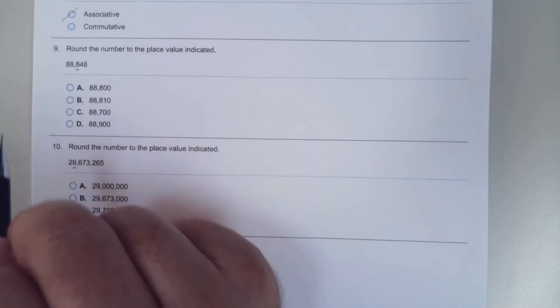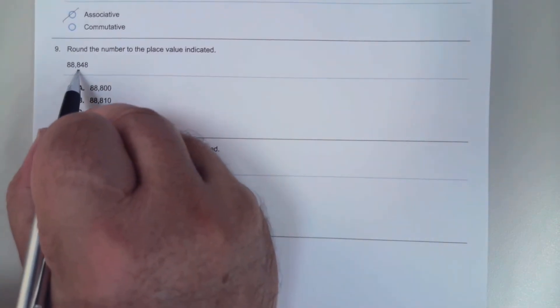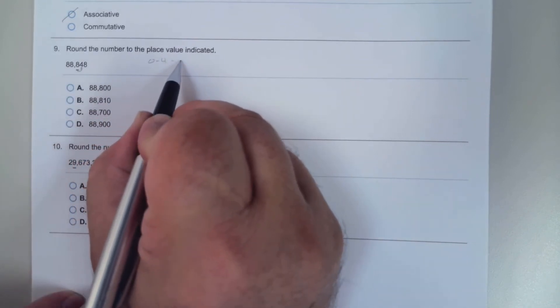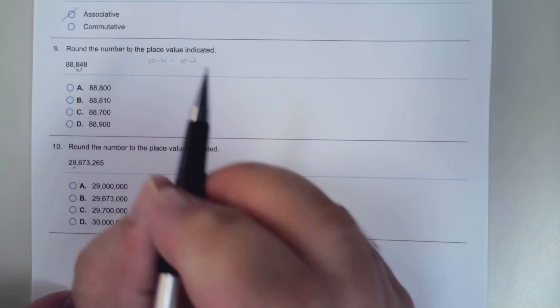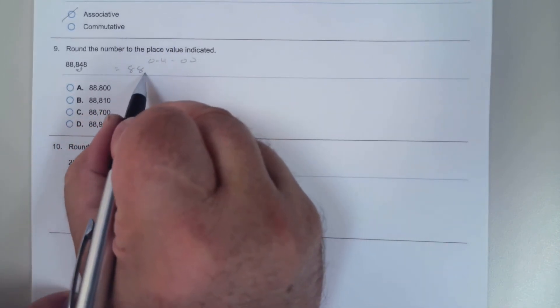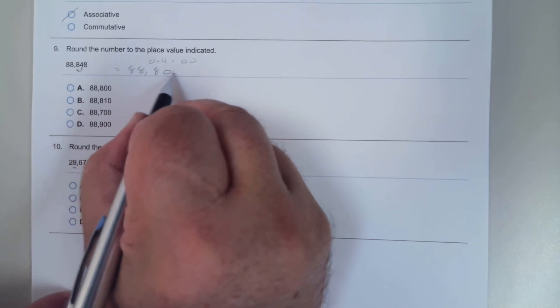Round to the hundredths. Remember, look to the one to the right. Since that's a 4, if it's between 0 and 4, make everything zeros. So it's 88,800.